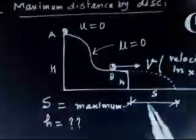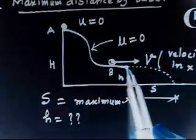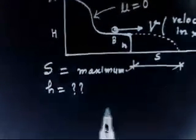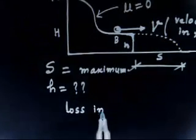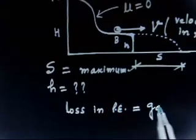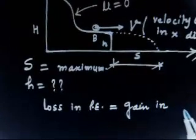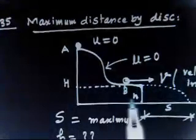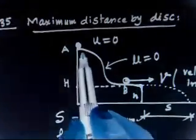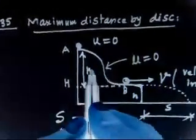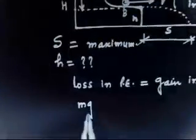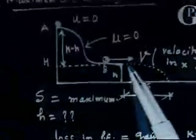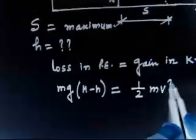Let us call this point A and this point B. I can apply energy conservation between these points: loss in potential energy equals gain in kinetic energy. Initially the disk was at the top, now it is on the horizontal plane. The height dropped is capital H minus small h. So: mg(H − h) = ½mv², which gives loss in PE equals gain in KE.